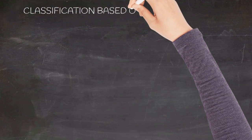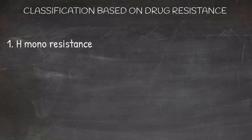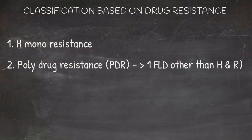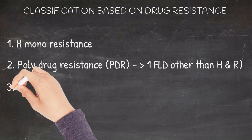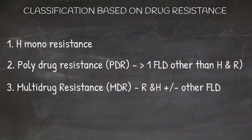Classification based on drug resistance. This classification is from the latest guidelines released in 2019. H-monoresistant tuberculosis: Here the resistance is only to isoniazid. There is no resistance to rifampicin or other first-line anti-TB drugs. The sensitivity to rifampicin has to be confirmed. Polydrug resistant TB: Here there is resistance to more than one first-line anti-TB drug but there is no resistance to isoniazid and rifampicin. Multi-drug resistant tuberculosis: Here there is resistance to both isoniazid and rifampicin with or without resistance to other first-line anti-TB drugs.